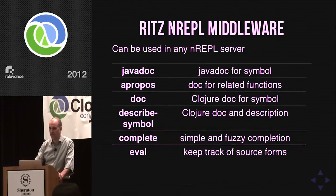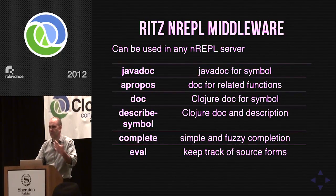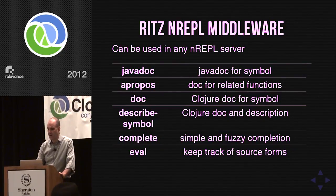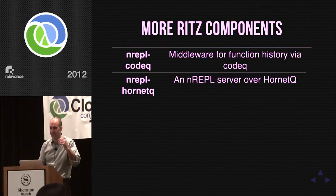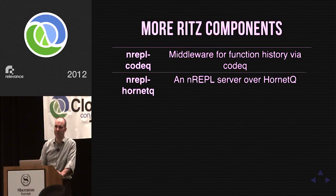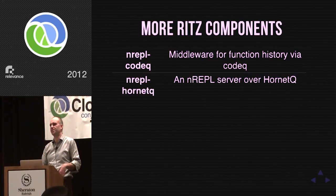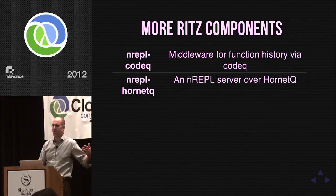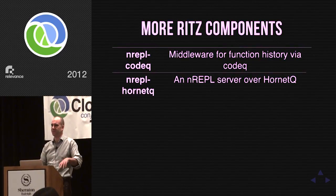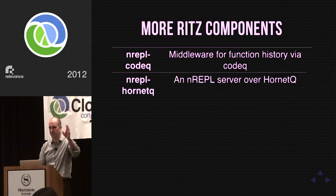I'll quickly go through some of the middleware in nREPL middleware: Javadoc, code completion — all the basic functions for a REPL. There are also two more Ritz components: an nREPL codec which is a REPL that runs over HornetQ — a message server — so you can run your REPL over a message queue. And there's an nREPL codec middleware that lets you pull up the history of a function — hit a key chord on a symbol and it looks up in Codox the whole history of that function and puts it in a separate buffer.